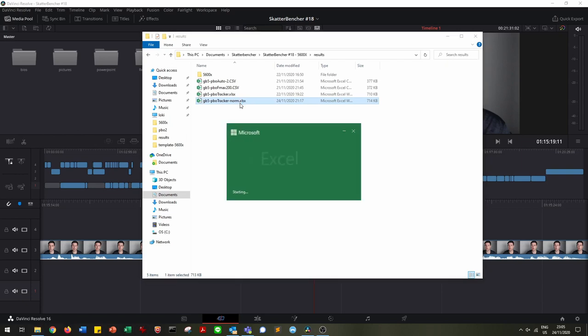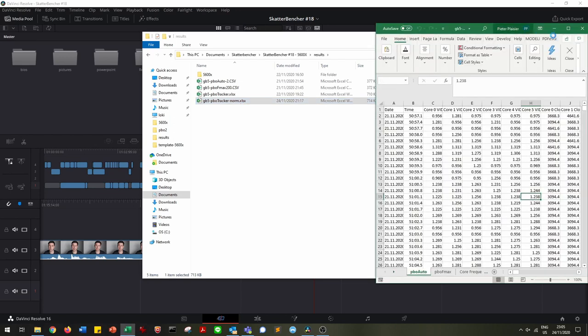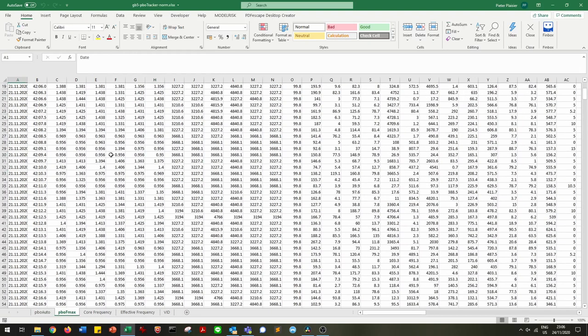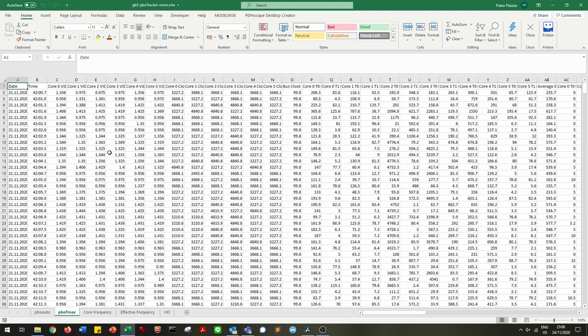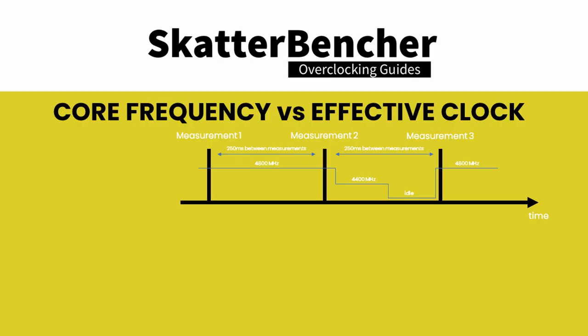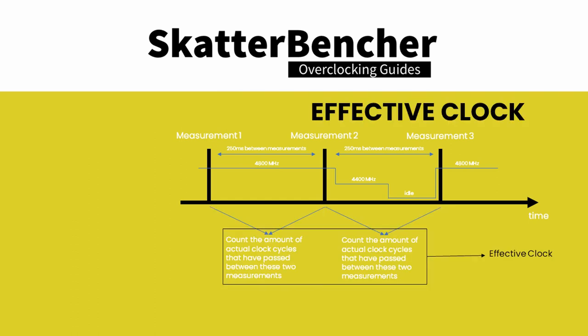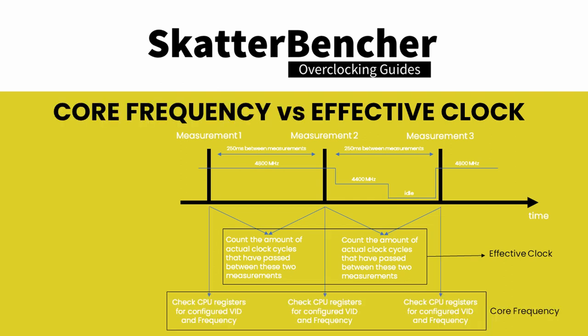I collected information on three types of data: VID, Core Frequency, and Effective Clock. VID is the core voltage that's requested by the CPU. It's very straightforward. Core Frequency is the frequency that's configured by the CPU and read from the CPU registers. So typically, this would be the frequency that you'll see pop up in CPU-Z, for example. Effective Clock measures the average actual clock across the polling interval. The difference between the two values is that the core frequency is the frequency as measured at one specific moment in time, whereas the Effective Clock measures the total of clock cycles between those two moments in time.